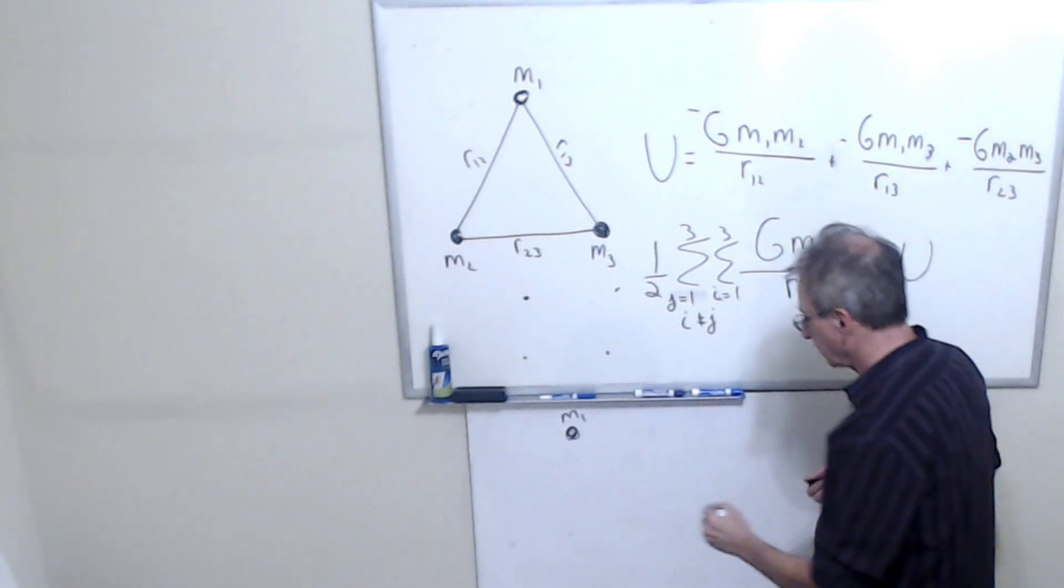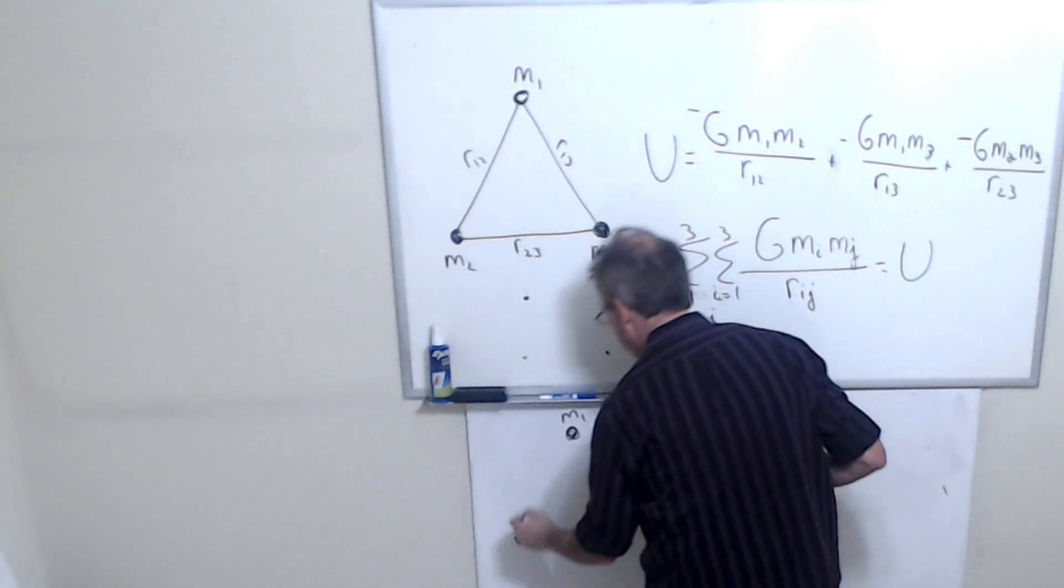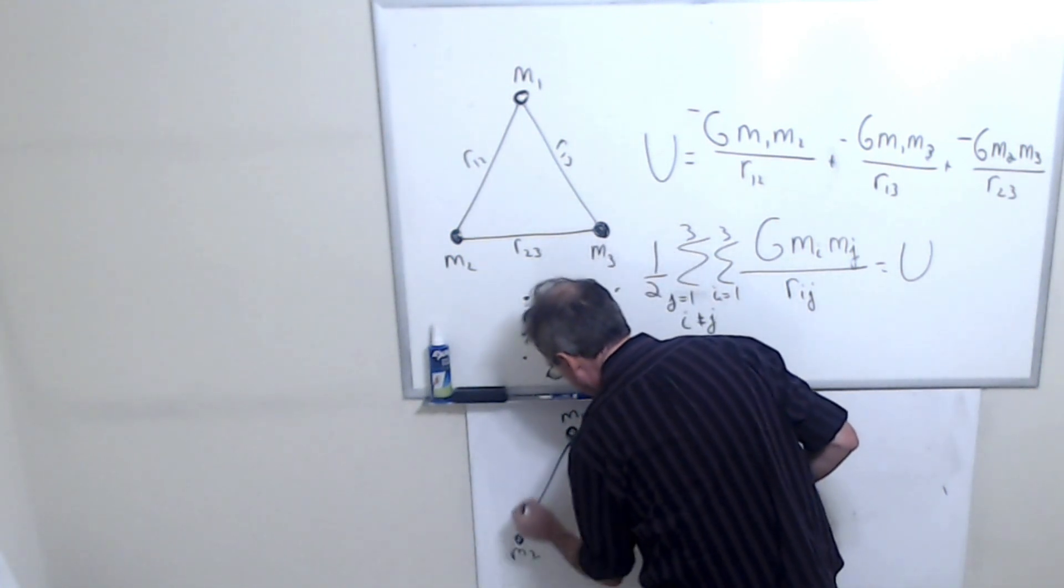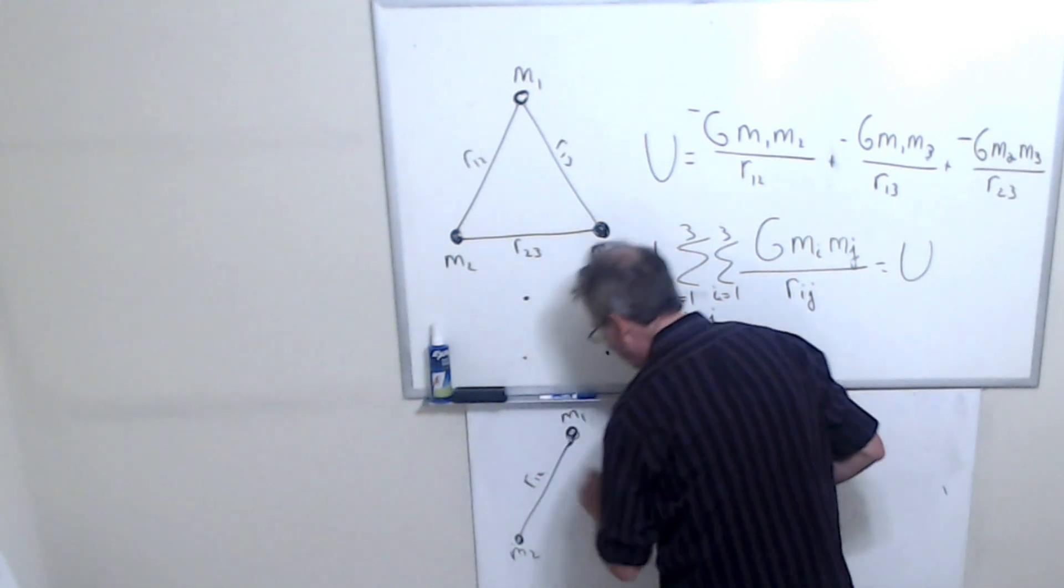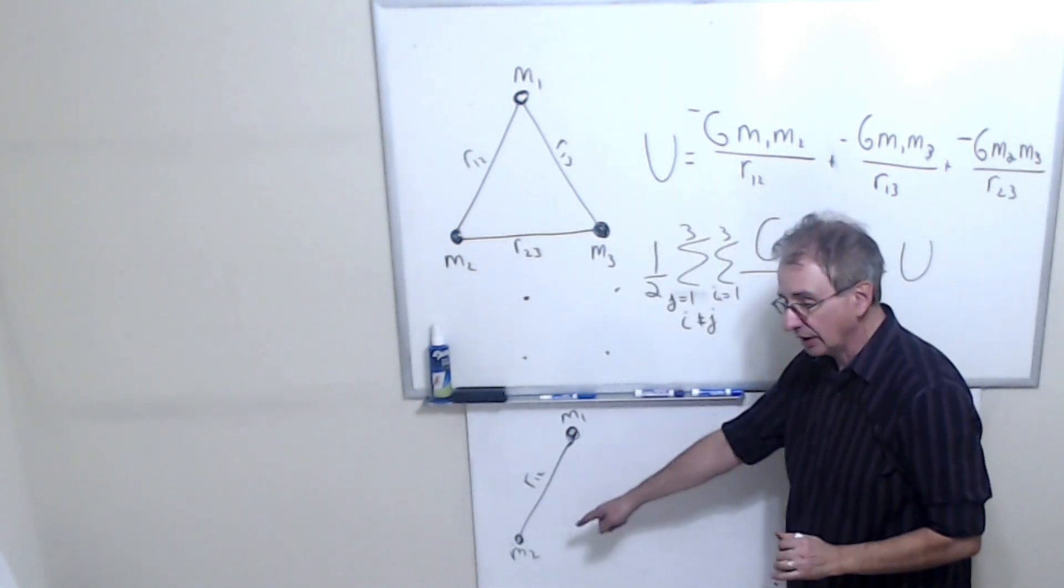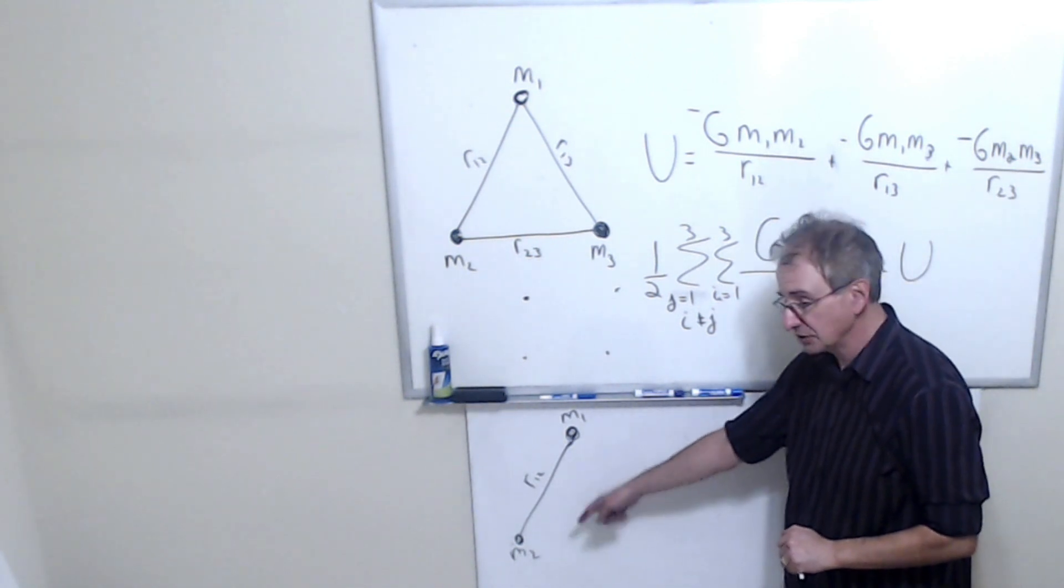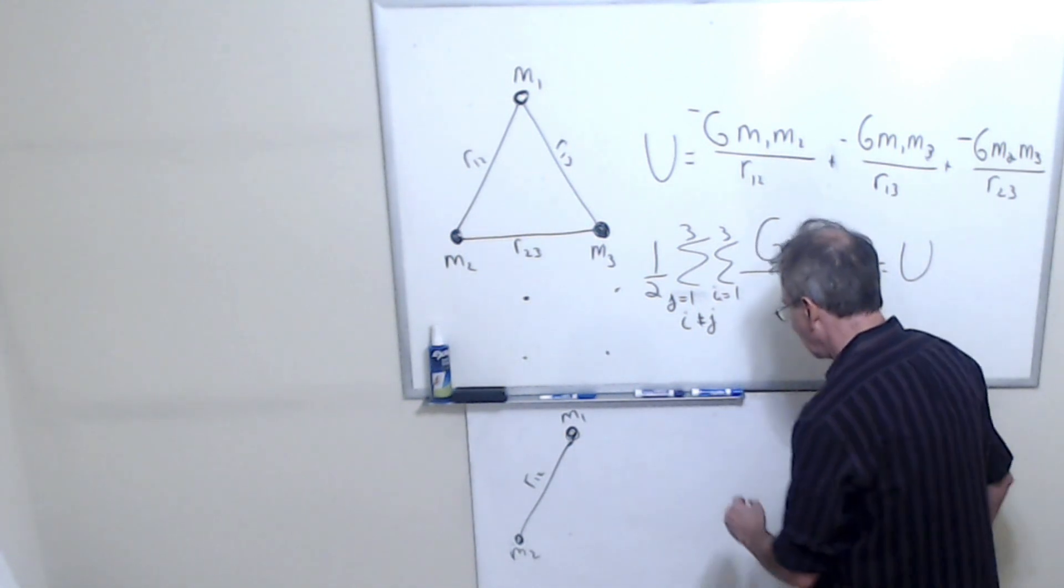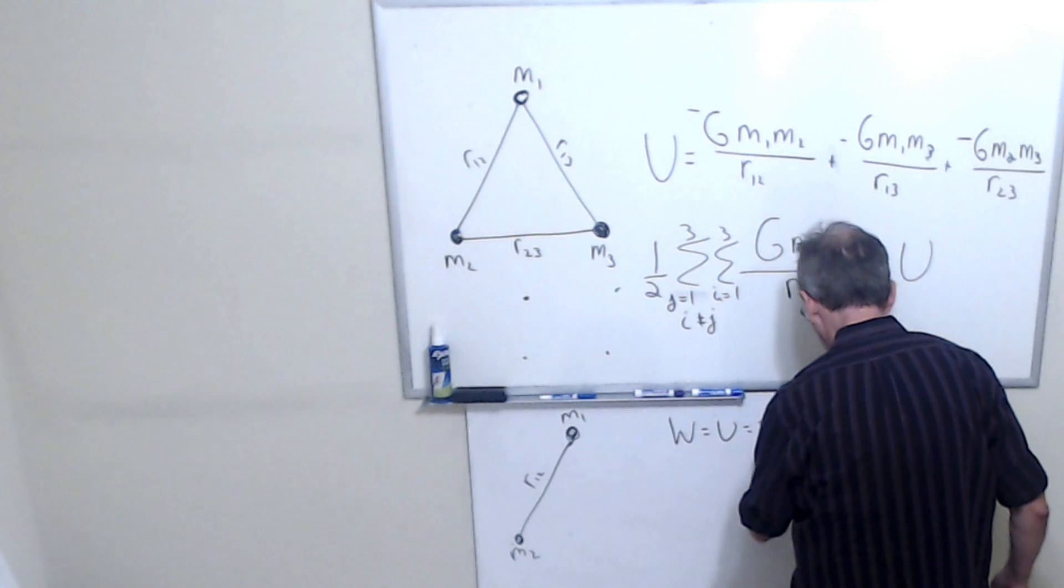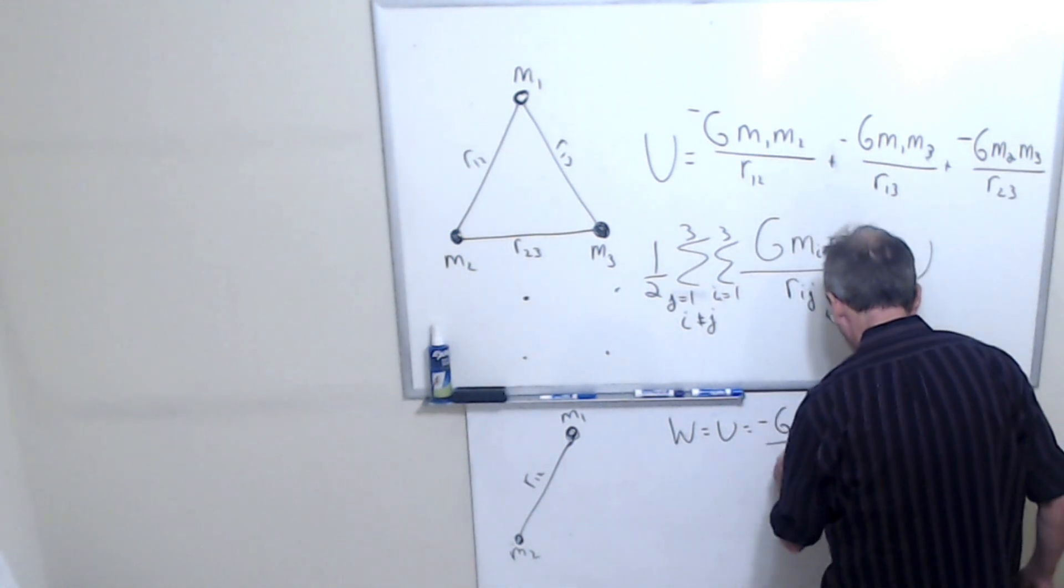I take the second particle and put it here, M2, which is a distance of R12 from M1. Now I have to do work on that object. The work that I do is reflective of the energy stored in the system. And so, the work that I do is minus G M1 M2 over R12.